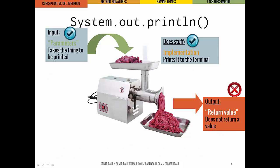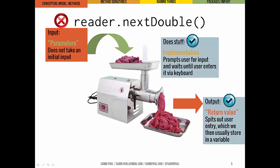As an example, the println method takes input — the thing we pass in is what we want printed. It does stuff — it prints that thing to the terminal — and then it doesn't actually have a return value; nothing gets spit out at the end. NextDouble is a little different: it doesn't take any inputs when we call it. You can see that when we actually call the method, nothing goes in the parentheses — that's where we'd normally put the arguments. But once we pass through the meat grinder, it prompts the user to type something, waits until they type it in, and then outputs the double value the user typed. Normally we can take that return value and store it in a variable.